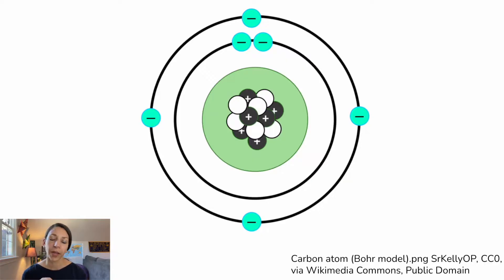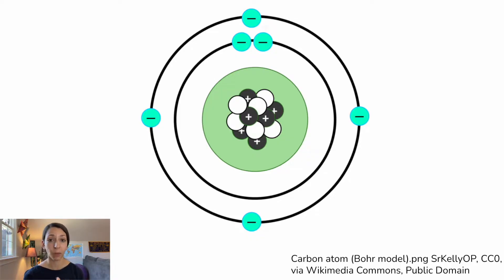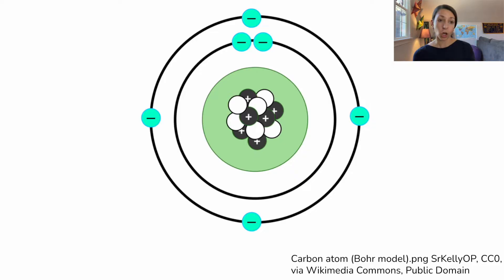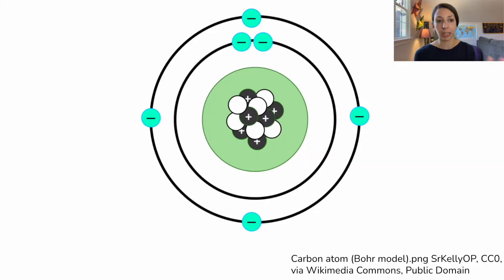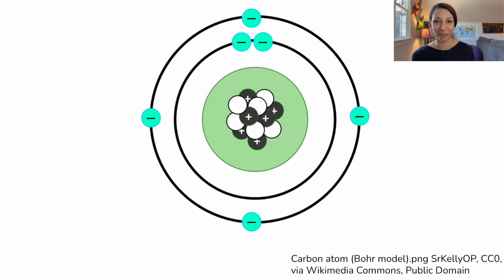Let's go back to our atoms really quick. Protons and neutrons are in the nucleus, and then electrons have different shells which they occupy surrounding the nucleus. Each shell can have a certain number of electrons within it. This is carbon, and carbon has a full first shell, but its second shell is incomplete, which means it can form up to four covalent bonds with other atoms.